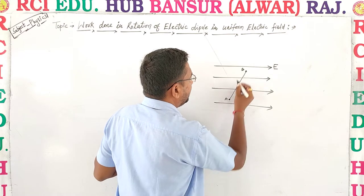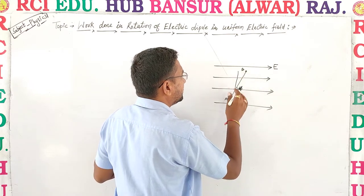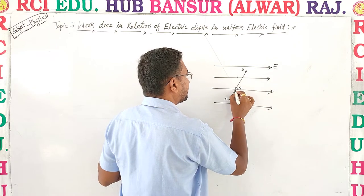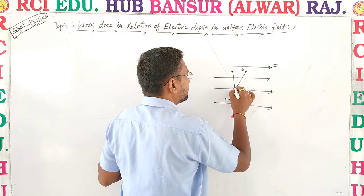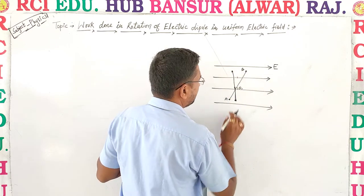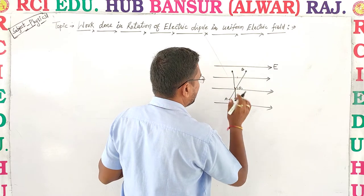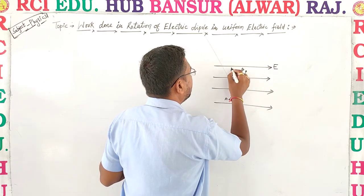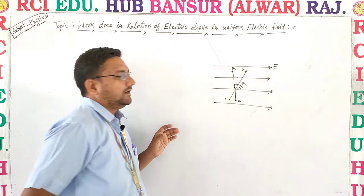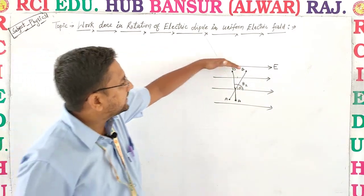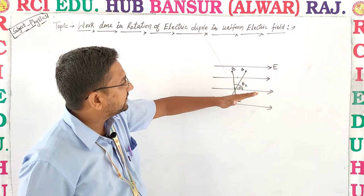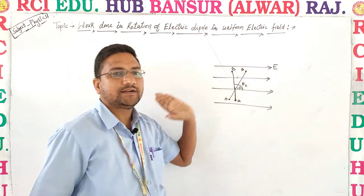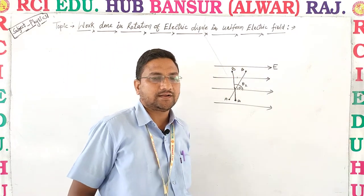The dipole is rotated from angle theta1 to theta2. So the dipole is initially at theta1 in the uniform electric field, and we rotate it up to theta2.